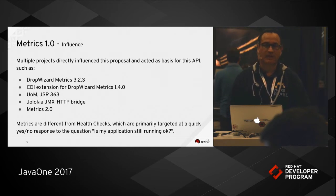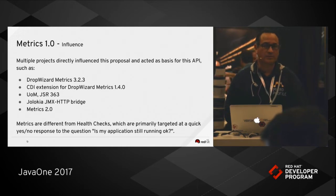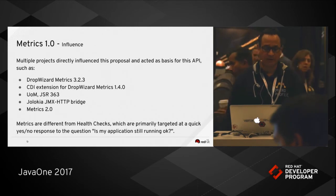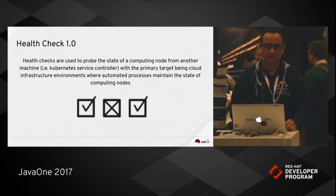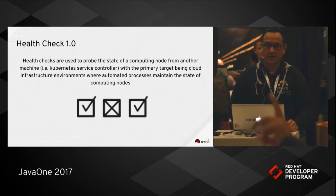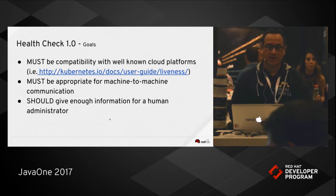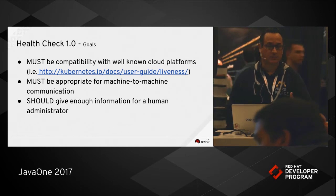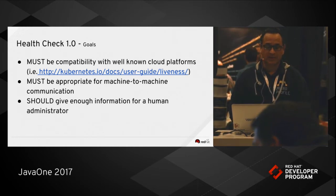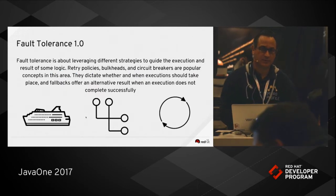One point of clarification: metrics are different from health checks, which are primarily targeted at a quick yes-or-no response to whether your application is still running okay. Health checks are used to probe the state of a computing node from another machine — for example, a Kubernetes service controller — with the primary target being cloud infrastructure environments. The goals of the Health Check 1.0 API were to be compatible with well-known cloud platforms like Kubernetes, to be appropriate for machine-to-machine communication, and to give enough information for a human administrator.